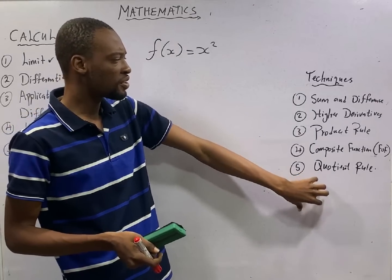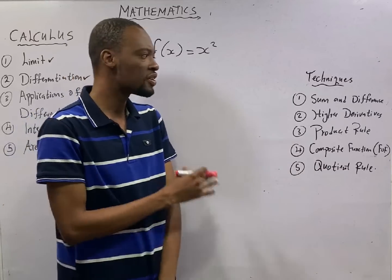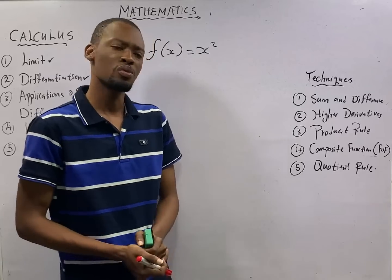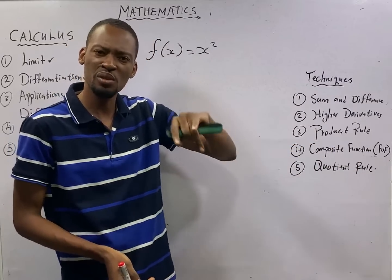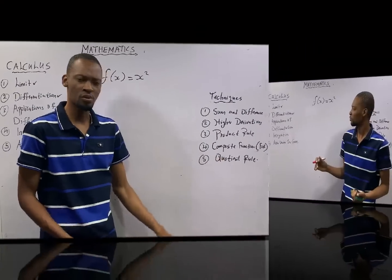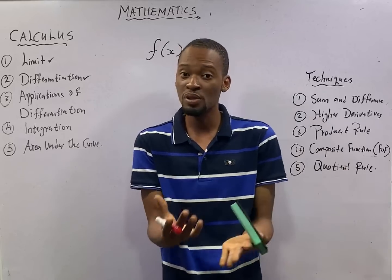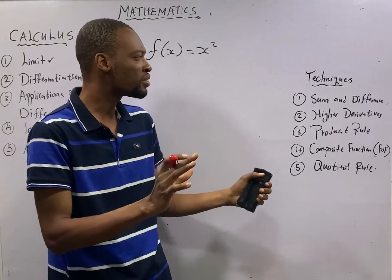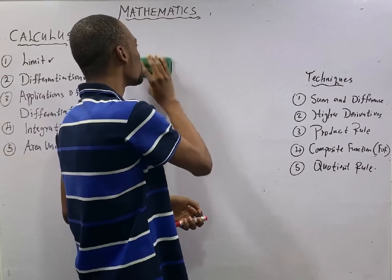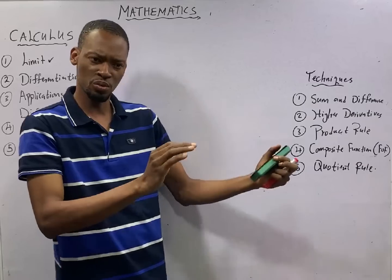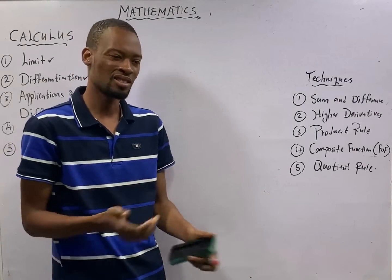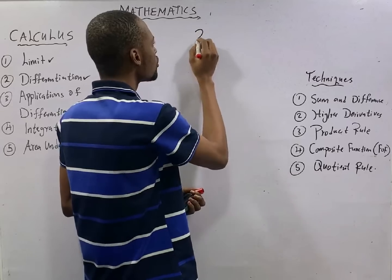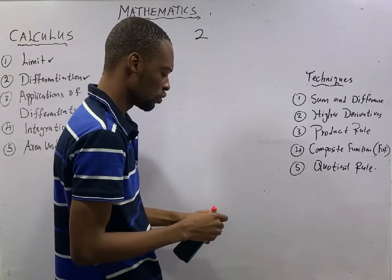There are about five differentiation techniques: differentiation of sums and differences, higher derivatives, product rule, composite function (also referred to as function of a function), and quotient rule. In this and the following episodes on differentiation and integration, I shall teach you the direct practical rules — no lengthy laws or grammar, just the step-by-step method.